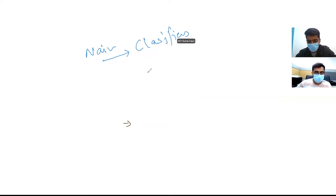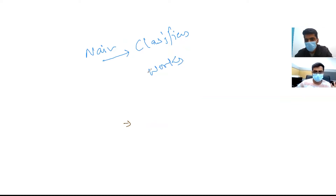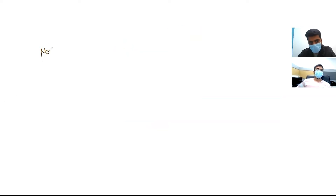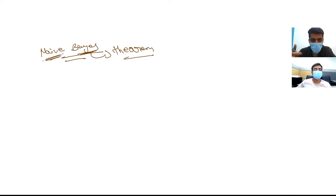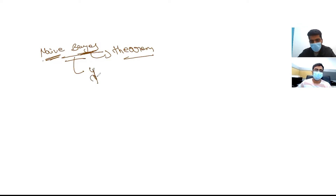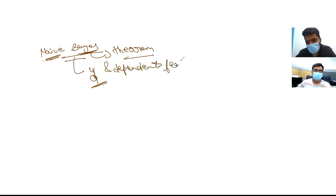Interviewer: I just want to know in simpler terms how the Naive Bayes classifier works. Candidate: Basically, what we do is apply Bayes' theorem with the naive assumptions I mentioned. In Bayes' theorem, for a given class variable — suppose we have a class variable y — and we have some dependent feature vectors, suppose features x equals x1, x2, x3.